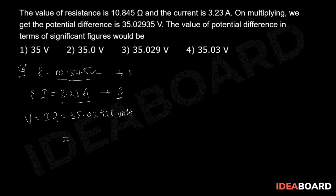So the result V = IR should be rounded off to 3 significant figures. If we round off this result to 3 significant figures, we get 35.0 volts. The correct option is the second one.